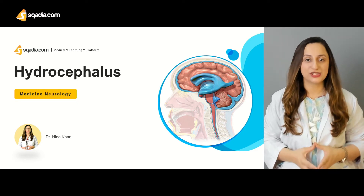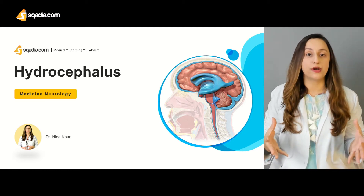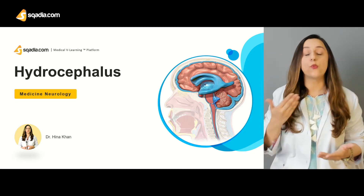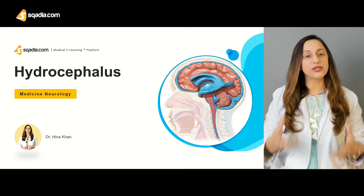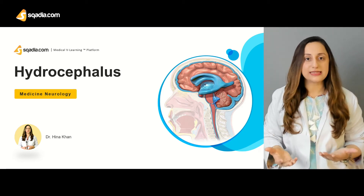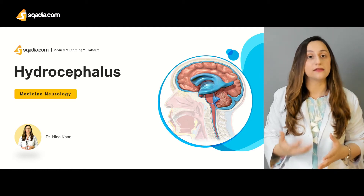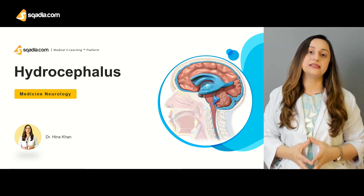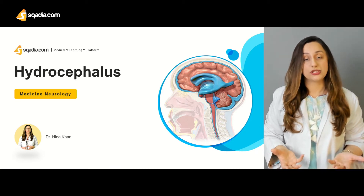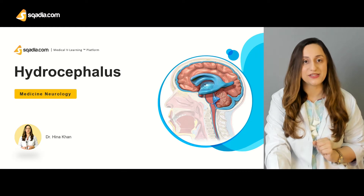Today, the topic under discussion is hydrocephalus. This condition is basically characterized by swelled or bulged ventricles. As regards the anatomy of the ventricles, ventricles are basically the fluid-filled spaces inside the brain. They perform multiple functions, the major one being the production of cerebrospinal fluid, and the ventricles themselves are filled up with cerebrospinal fluid. The pathological condition in which bulging or swelling of the ventricles occurs is known as hydrocephalus.